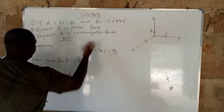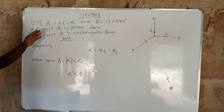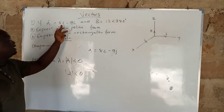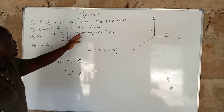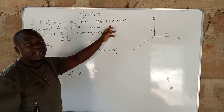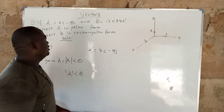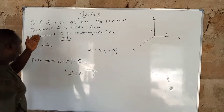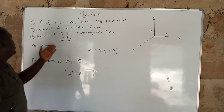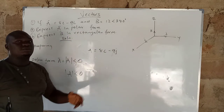We have a very beautiful question on the board. The vector of A is 8i minus 9j, and the vector of B is 12 at the angle of 340 degrees. Express A in polar form, and express B in rectangular form.